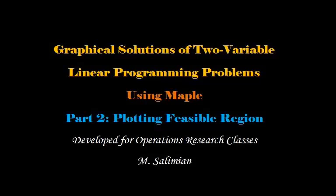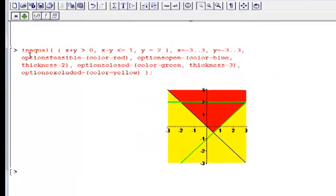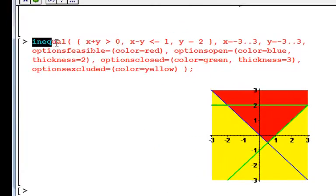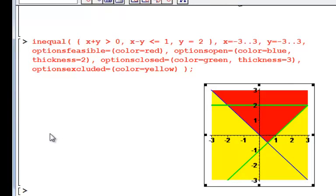The INEQUAL command will allow us to plot the feasible region for functions that only have two variables. I am going to show you how you can use this command to plot the feasibility.